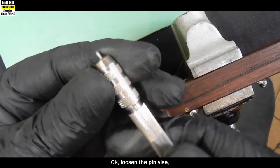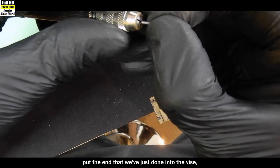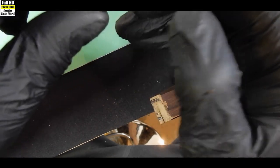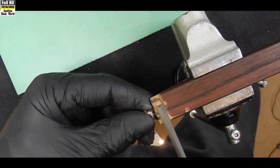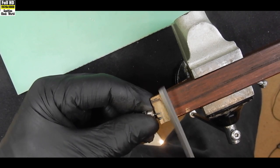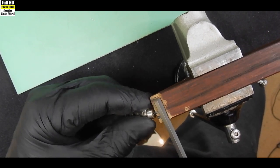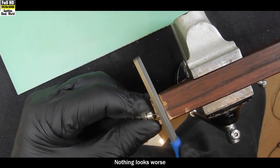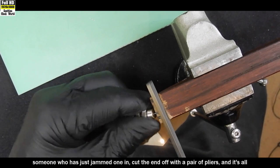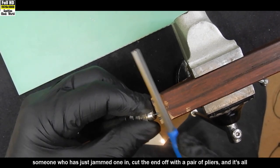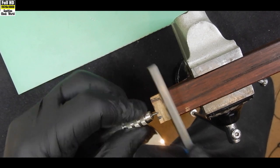Okay, loosen the pin vise. Take the tapered pin out. Put the end that we've just done into the vise. Tighten it down. Same thing again. Line it on a piece of wood. Square off the end of the pin first. Nothing looks worse than a rough tapered pin in the clock. Someone has just jammed one in, cut the end off with a pair of pliers and it's all rough and jagged. Nothing says poor workmanship better than that.